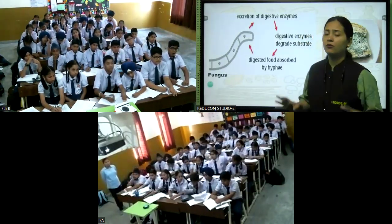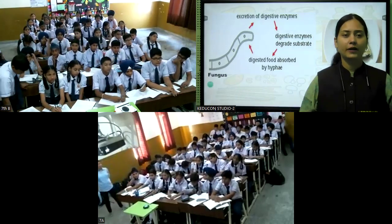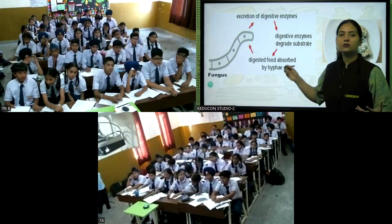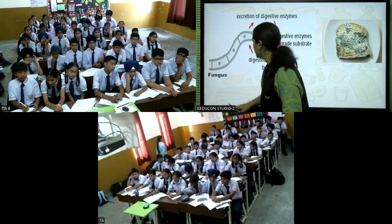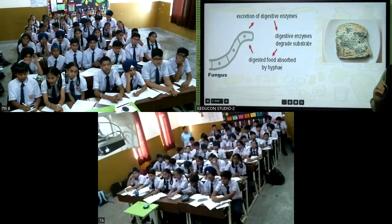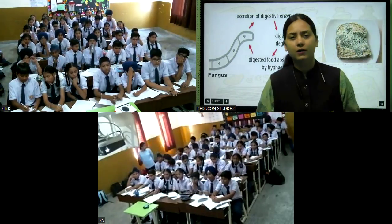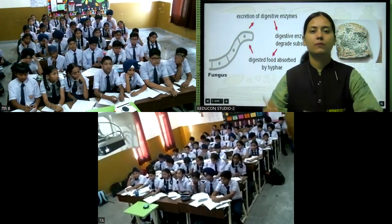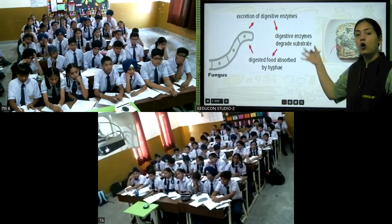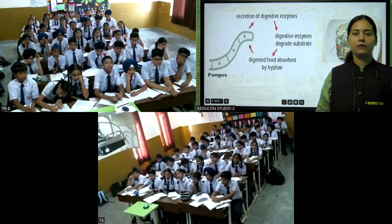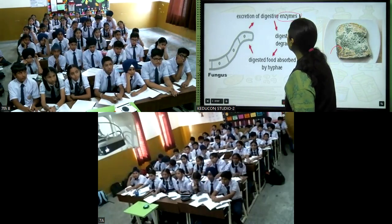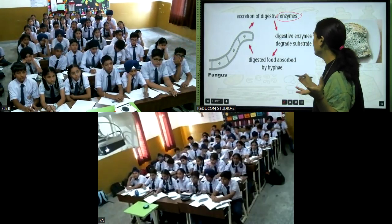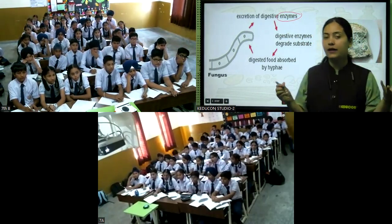We have all seen fungus that grows on bread, especially in a humid environment or during the rainy season. So what does mold do? Mold is a fungus that grows on bread and secretes digestive enzymes — enzymes that break down complex food into simpler substances. Remember: digestive means complex to simpler. It secretes enzymes on the bread, meaning outside its body.